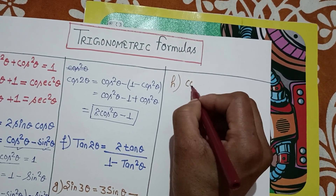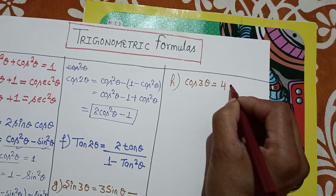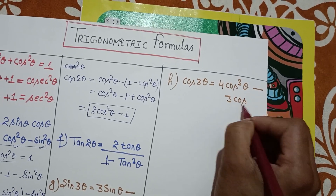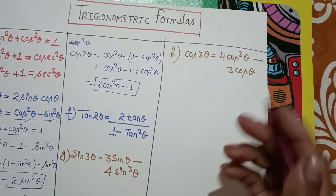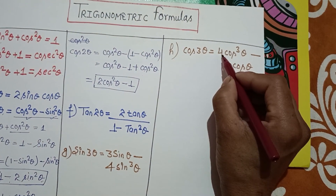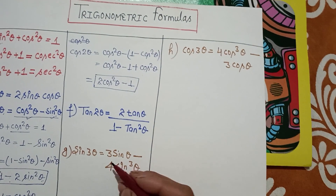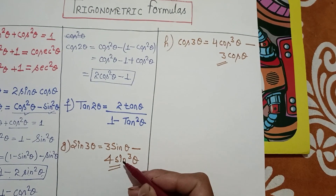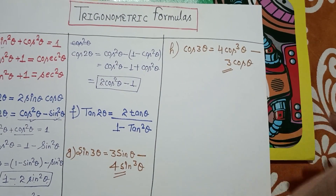Now we have cos 3θ. The formula for cos 3θ is: cos 3θ = 4cos³θ − 3cos θ. Notice it is opposite to sin 3θ — for sin we had 3sinθ − 4sin³θ, but for cos the 4 comes first: 4cos³θ − 3cosθ. If we remember this distinction, we can use these formulas simply.